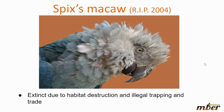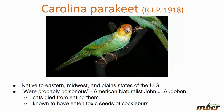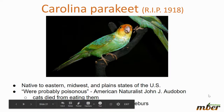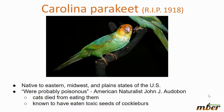The Spix's Macaw went extinct around 2014. I believe this is actually the bird from the movie Rio — the villain bird was based on this species. This bird went extinct due to habitat destruction and illegal trapping. The Carolina Parakeet went extinct in 1918; it was native to the eastern, Midwest, and plain states of the United States. They ate toxic seeds and cats that ate them wound up dead.